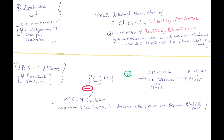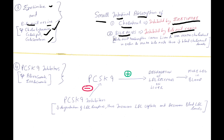Next are ezetimibe and bile acid resins. Examples of bile acid resins are cholestyramine, cholestipol, and colesevelam. Small intestinal absorption of cholesterol is inhibited by ezetimibe. Small intestinal absorption of bile acids is inhibited by bile acid resins. Decreased bile acid reabsorption causes the liver to use more cholesterol to make bile acids, thus decreasing blood cholesterol levels.